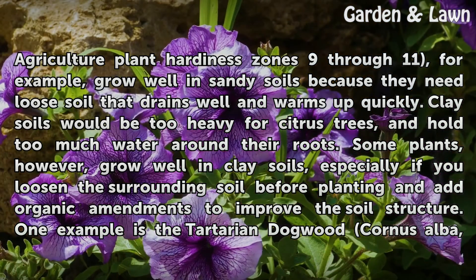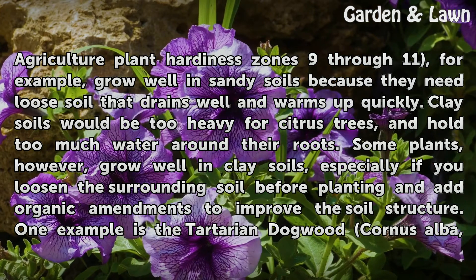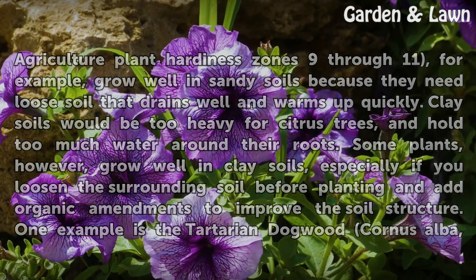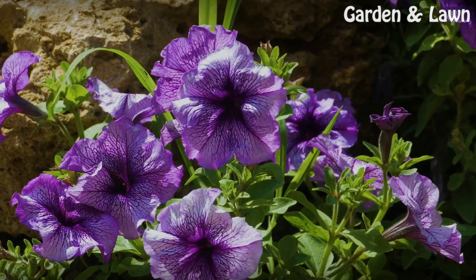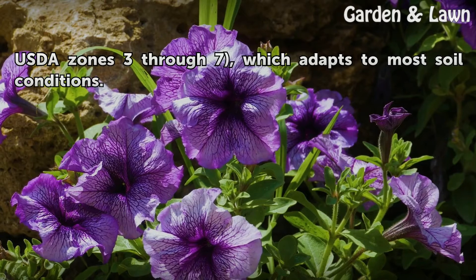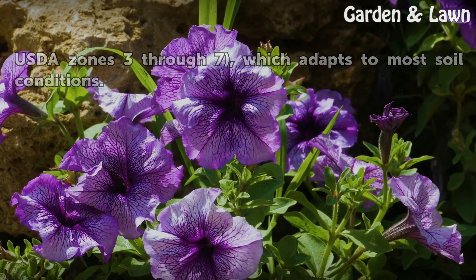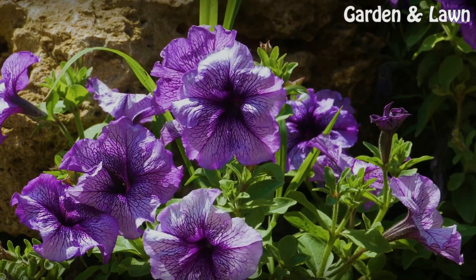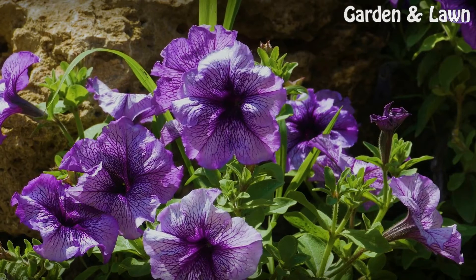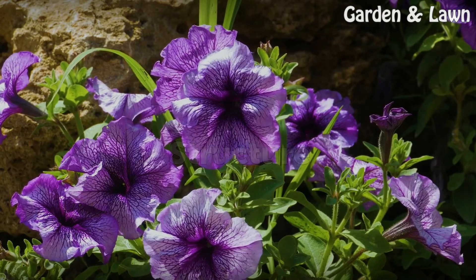Some plants, however, grow well in clay soils, especially if you loosen the surrounding soil before planting and add organic amendments to improve the soil structure. One example is the Tartarian dogwood (Cornus alba, USDA zones 3 through 7), which adapts to most soil conditions.